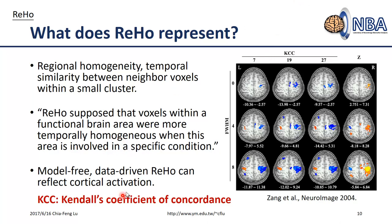This method is model-free because you don't need to design a task — all you need to do is quantify the temporal similarity between local voxels or neighboring voxels. ReHo calculates temporal similarity between neighboring voxels within a small cluster; you won't calculate long-distance similarity between, for example, prefrontal and occipital regions. Normally, ReHo considers up to 27 neighboring voxels.